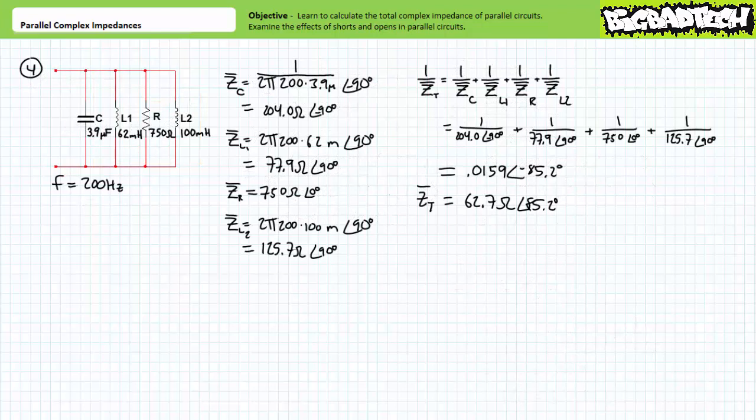For our fourth example problem, we've been given a parallel relationship of a 3.9 microfarad capacitor, a 62 millihenry inductor, a 750 ohm resistor, and a 100 millihenry inductor at an excitation frequency of 200 hertz. The capacitor is an impedance of roughly 204.0 ohms at negative 90 degrees. The first inductor is 77.9 ohms at positive 90 degrees. The resistor is 750 ohms at zero degrees. The second inductor is 125.7 ohms at positive 90 degrees. Using the more involved method for two or more impedances in parallel, we arrive at a total impedance of 62.7 ohms at an angle of positive 85.2 degrees.